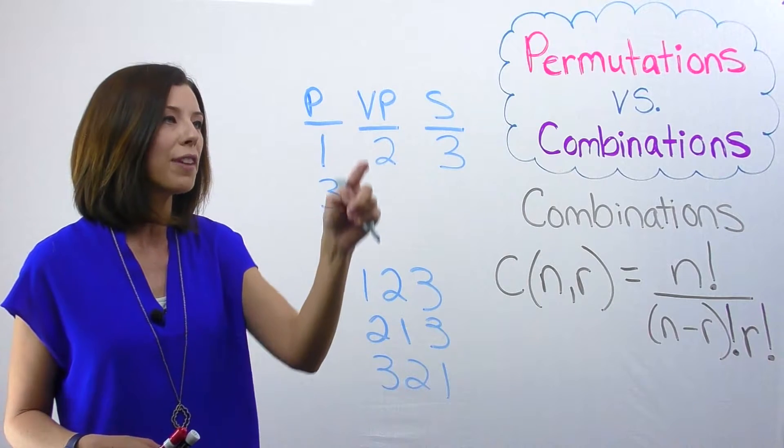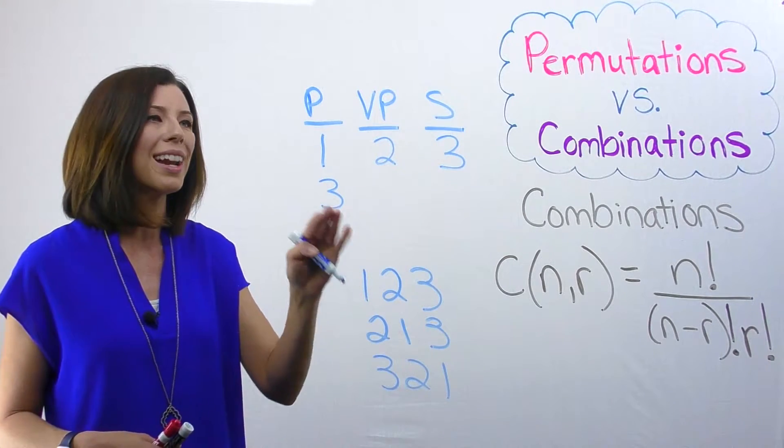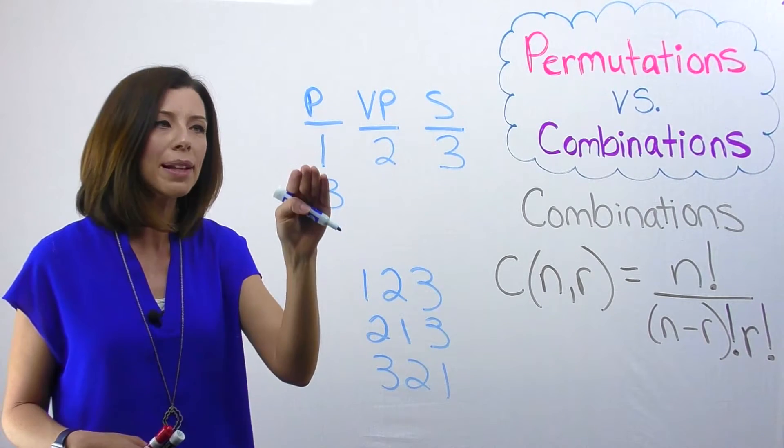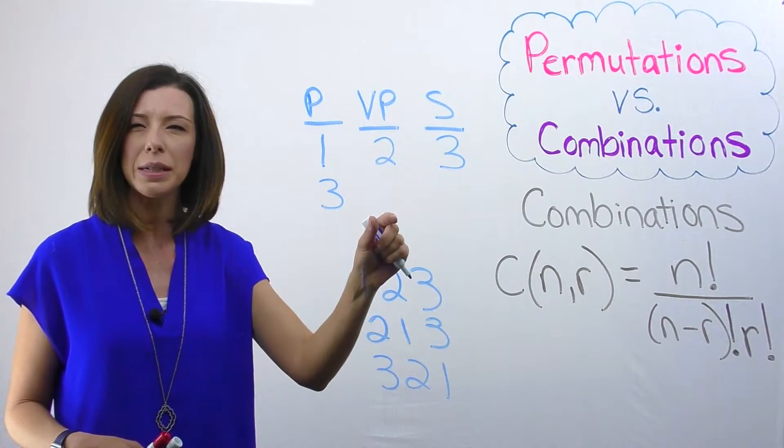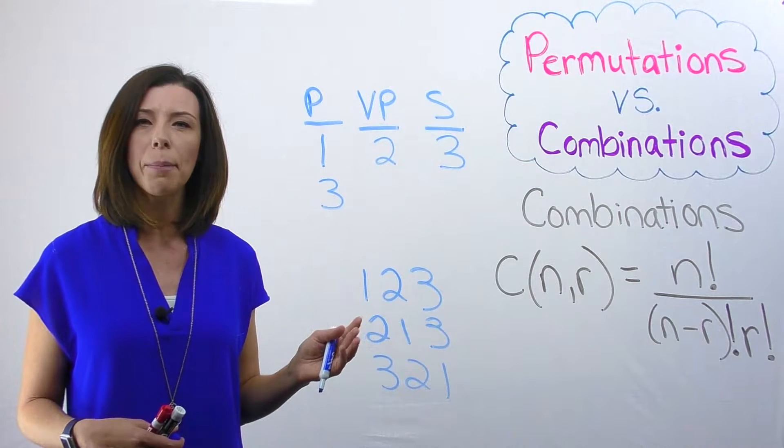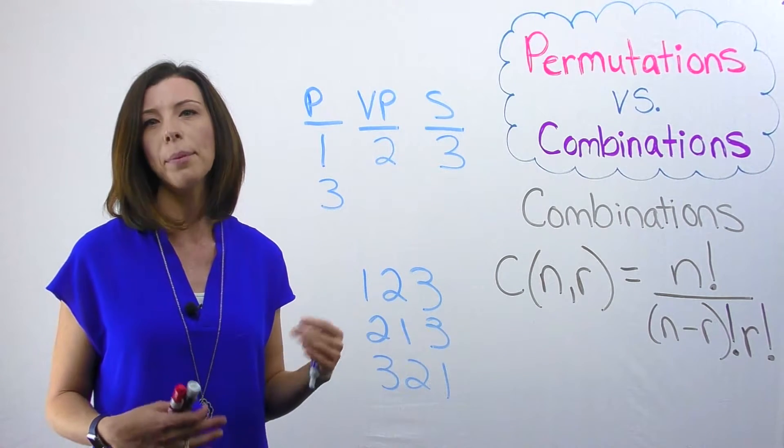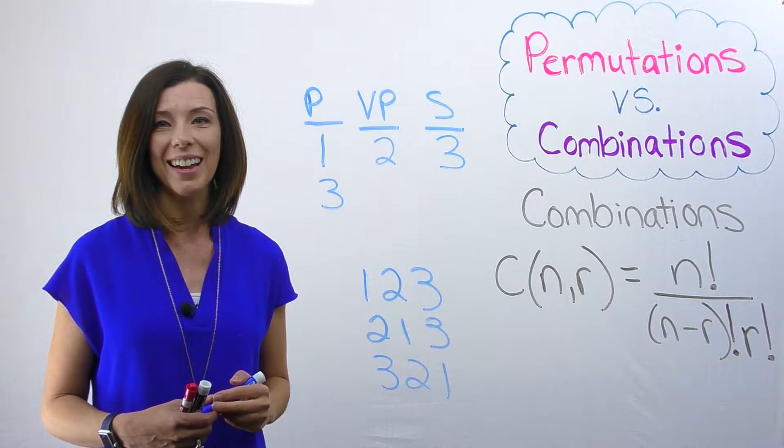Versus in my President, Vice President, and Secretary situation, it does matter. If I pick the first person first and they're President, that's different than if they're Vice President. Hopefully that clears up a little bit how I know this is a combinations problem versus a permutation. Let's go back to solving that.